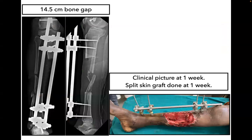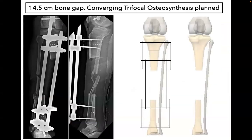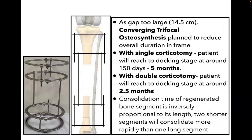As the patient had a large gap and a large raw area, a skin graft was done. Because of the large gap, to reduce time in frame, a converging trifocal osteosynthesis plan was made. This is how a prefabricated frame will look like. Approximately, a corticotomy will be done between the first and second ring, and distally a corticotomy will be done between the third and fourth ring. With a single corticotomy, the patient will reach the stage of docking at around 150 days — approximately five months. With double corticotomy, the patient will reach docking at around 2.5 months, significantly saving the initial period. As consolidation time of regenerated bone is inversely proportional to its length, two shorter segments consolidate more rapidly than one long segment. This is precisely the basis for opting for trifocal osteosynthesis.